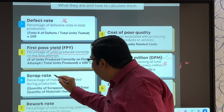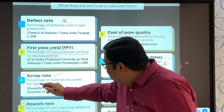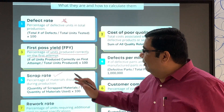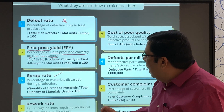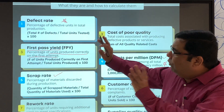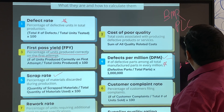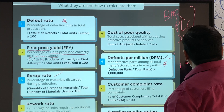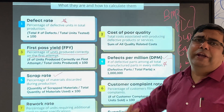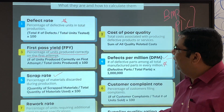The fifth KPI is scrap rate — the percentage of materials discarded during production. You calculate it as quantity of scrap materials divided by total quantity of materials used, multiplied by 100. All this information can be obtained from the BMR, batch records, PLC, SCADA, or equipment HMI. You simply collect the data and calculate how much wastage, scrap, or first pass yield there is.